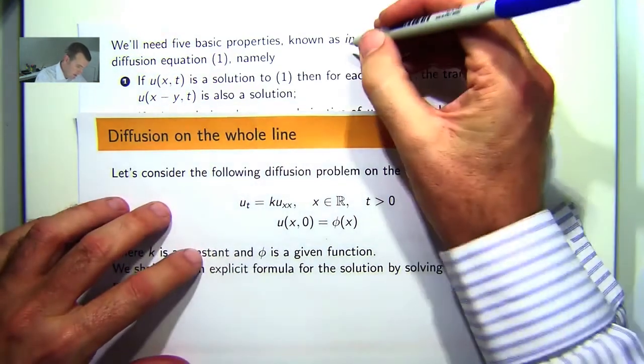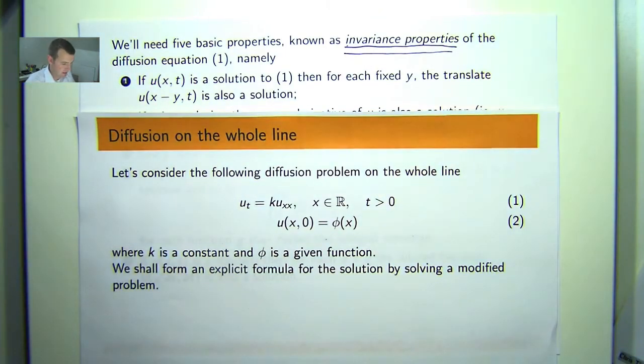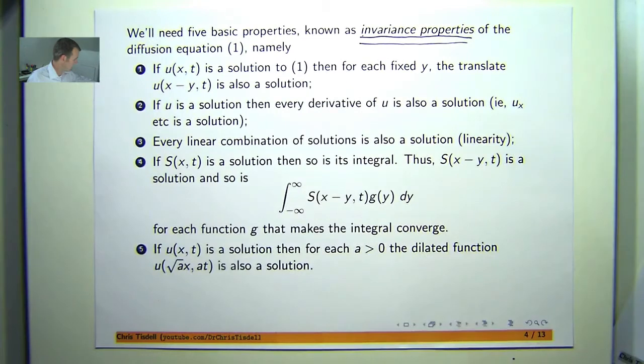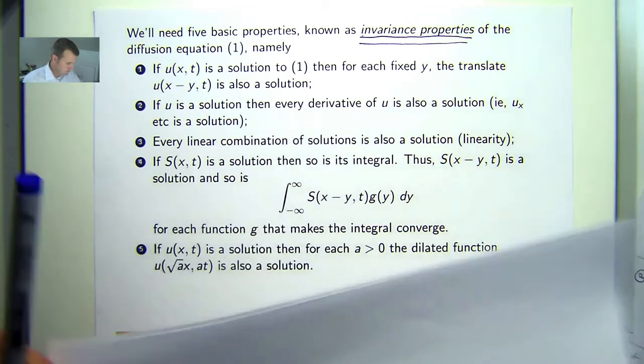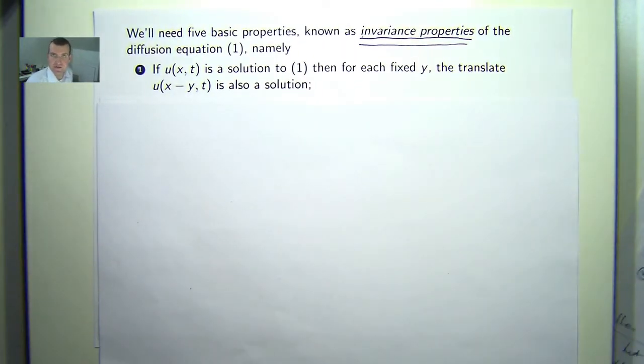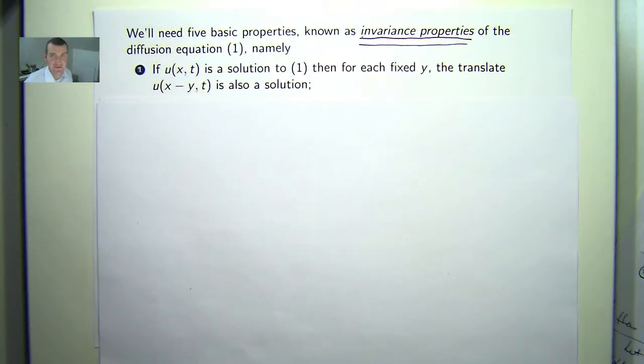So the ideas or the 5 properties are known as invariance properties. Now there are a whole bunch of them here. I'm going to talk you through them quickly and then give a sketch of the proof for these kinds of properties. Now these 5 properties on the surface probably won't seem like they're so important, but when we actually come to solving this problem here we're going to use each of these 5 properties. So this particular presentation is a little bit of housekeeping, a little bit of preparation so that we can actually get on and solve the original problem 1, 2.